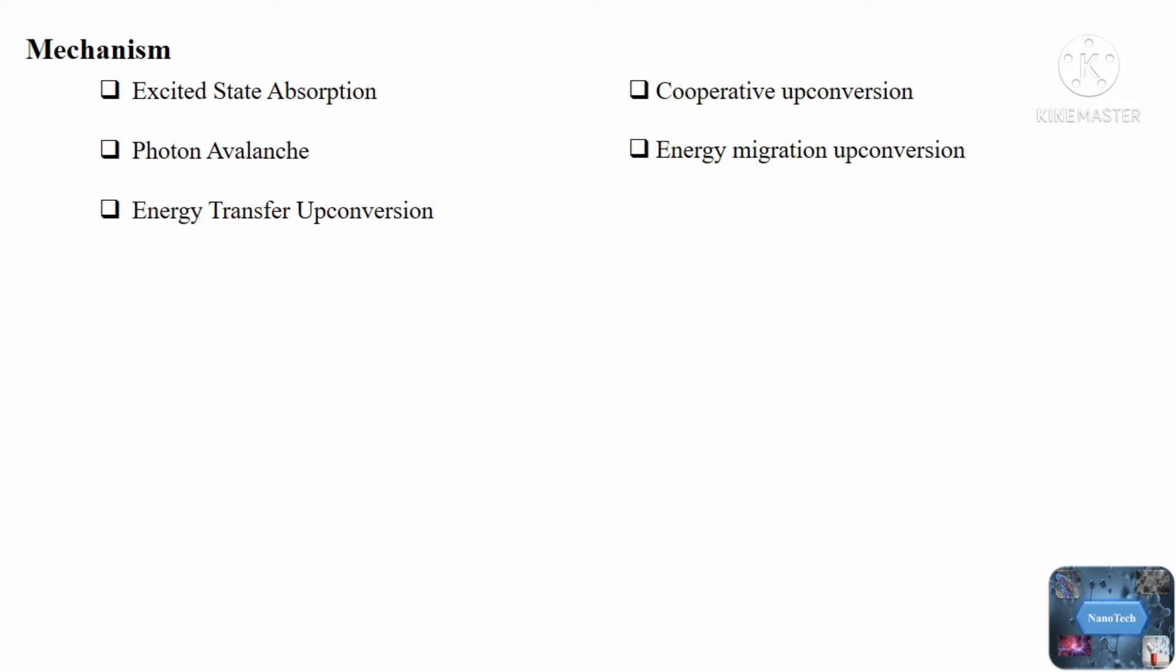Excited state absorption. This is a multi-step excitation that involves sequentially absorbing one or more photons from the ground state to the intermediate reservoir stage, and then populating at the excited state, from which upconversion luminescence occurs.